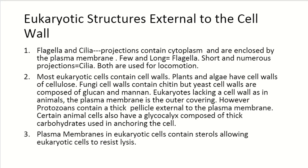Eukaryotes lacking a cell wall — as in the case of animal cells — have the plasma membrane as the outermost covering. However, protozoans contain a thick pellicle external to the plasma membrane. Certain animal cells also have a glycocalyx composed of thick carbohydrates used in anchoring the cell. The plasma membrane in eukaryotic cells contains sterols, allowing eukaryotic cells to resist lysis.